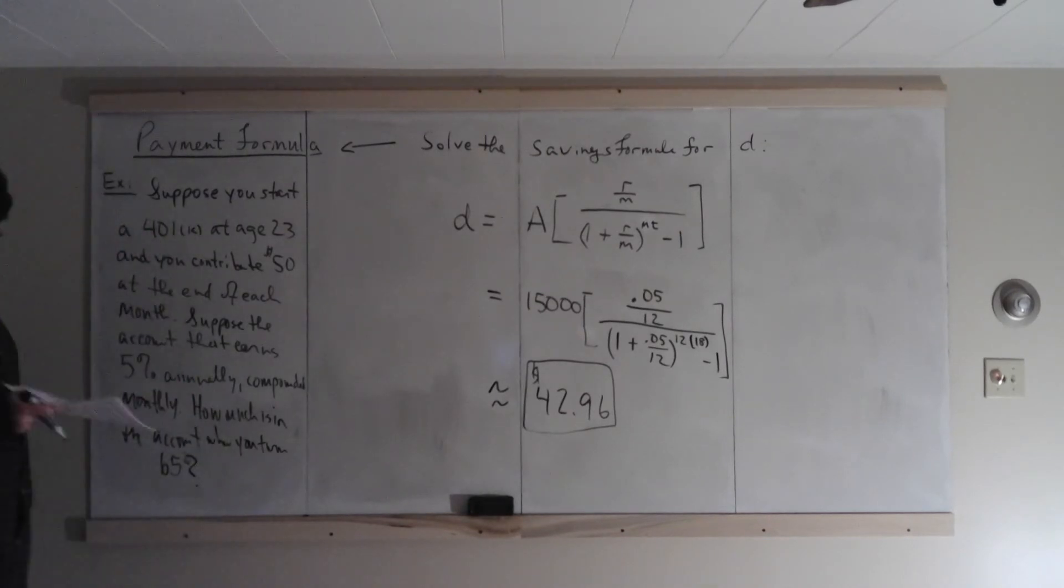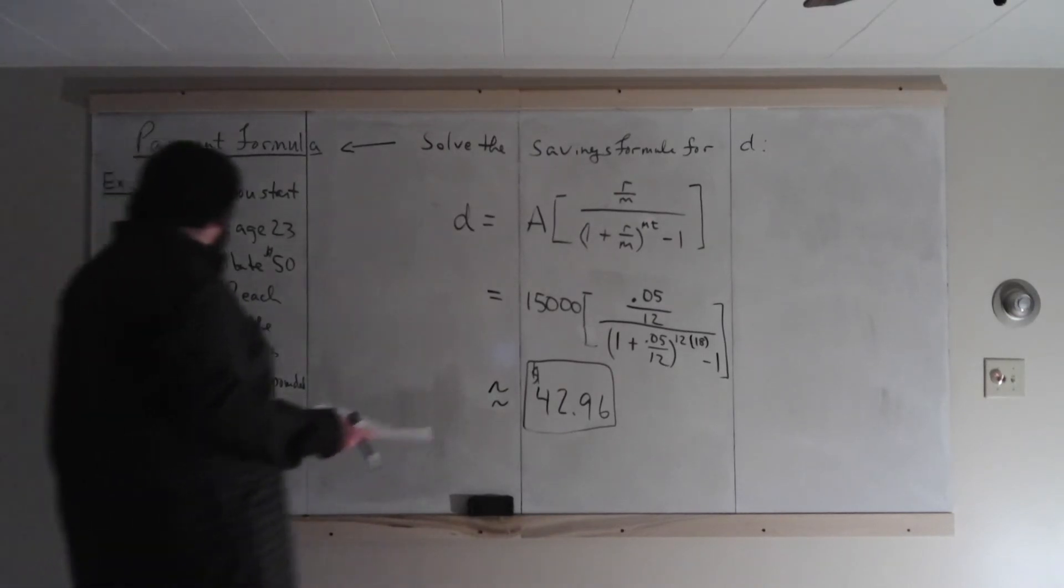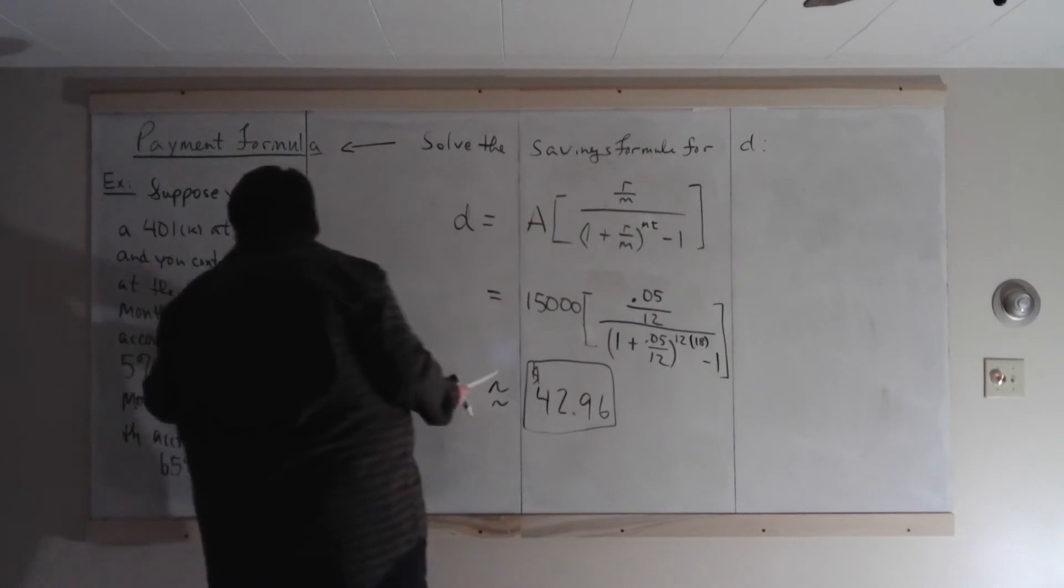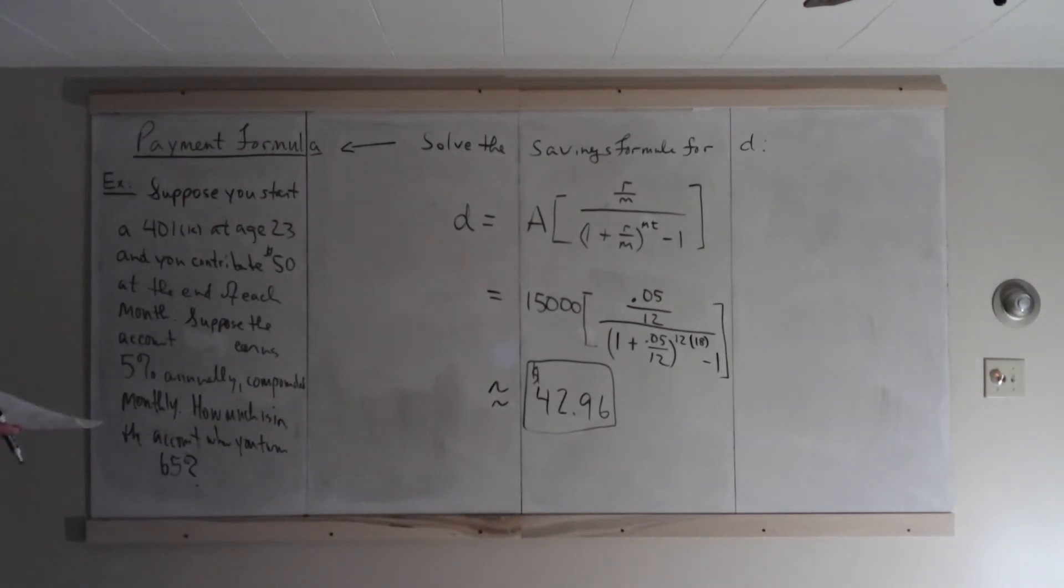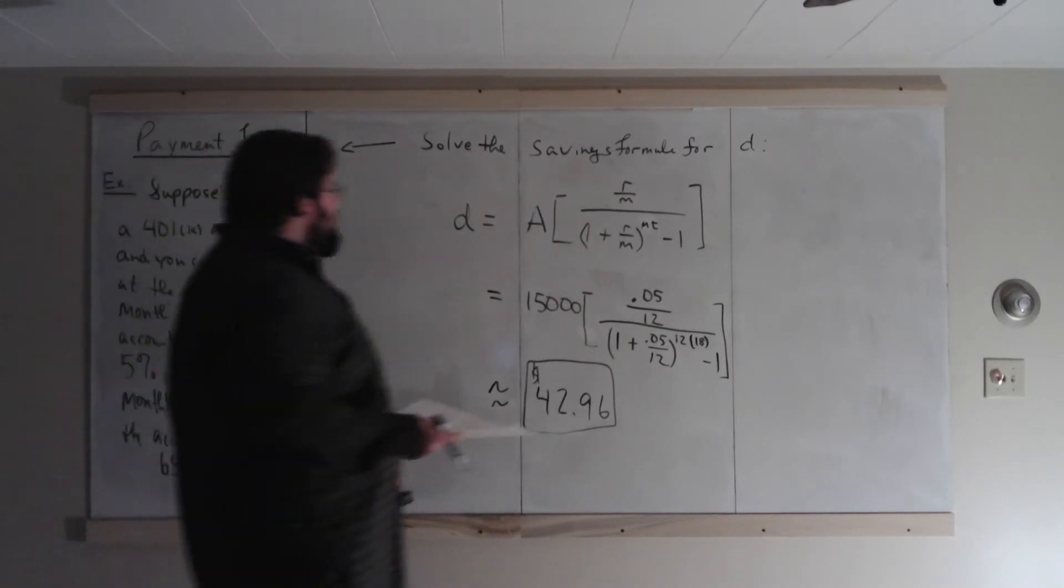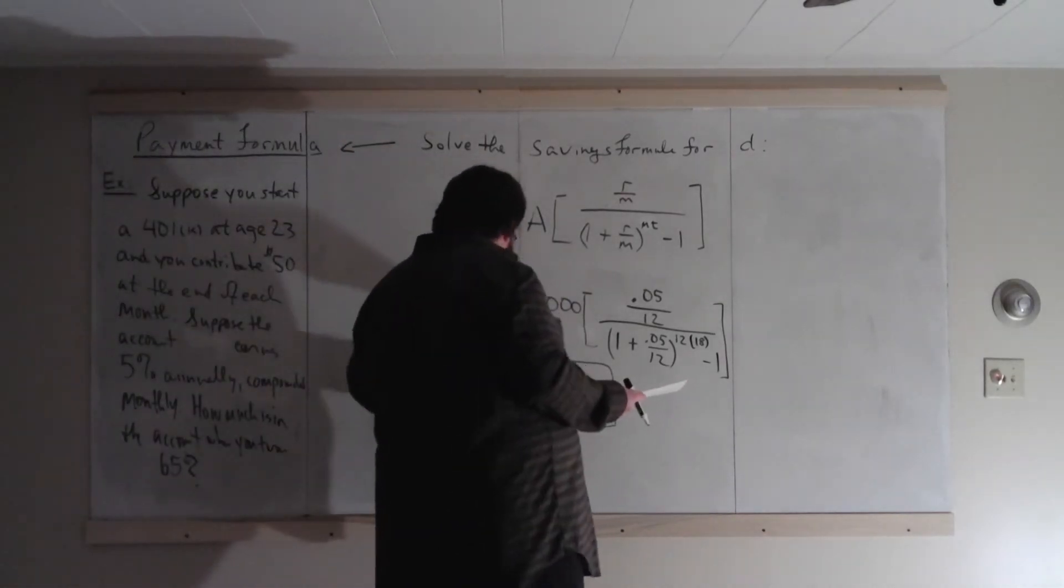So, let's read this question and figure out which formula applies. Suppose you start the 401k at age 23, you contribute $50 at the end of each month. Suppose the account earns something. Suppose the account earns, I should just say, suppose the account earns 5% annually, compounded monthly. How much is in the account when you turn 65? Well, which formula would you use for something like this?